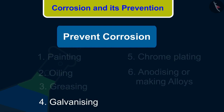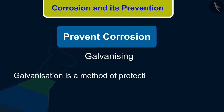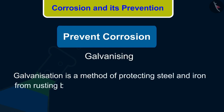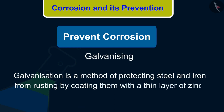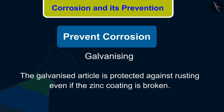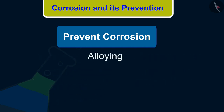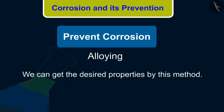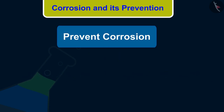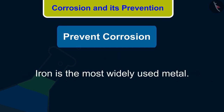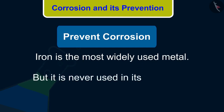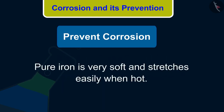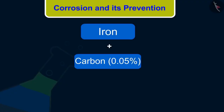What is galvanizing? Galvanization is a method of protecting steel and iron from rusting by coating them with a thin layer of zinc. The galvanized article is protected against rusting even if the zinc coating is broken. What is alloying? Alloying is a very good method of improving the properties of a metal. We can get the desired properties by this method. For example, iron is the most widely used metal, but it is never used in its pure state. This is because pure iron is very soft and stretches easily when hot. But if it is mixed with a small amount of carbon, about 0.05%, it becomes hard and strong.